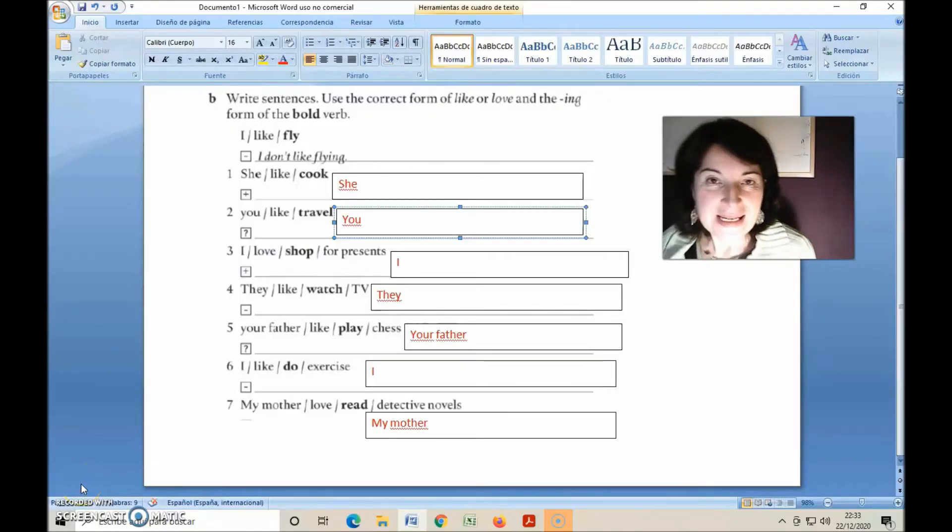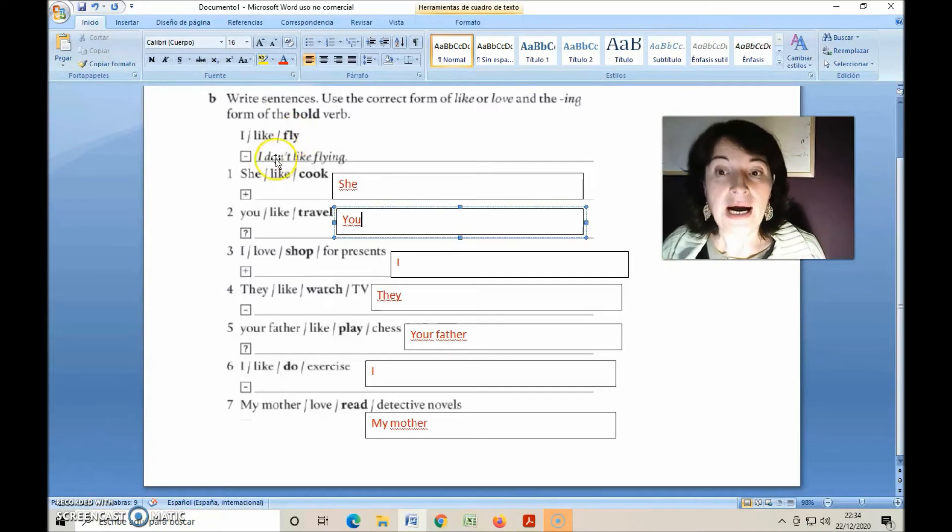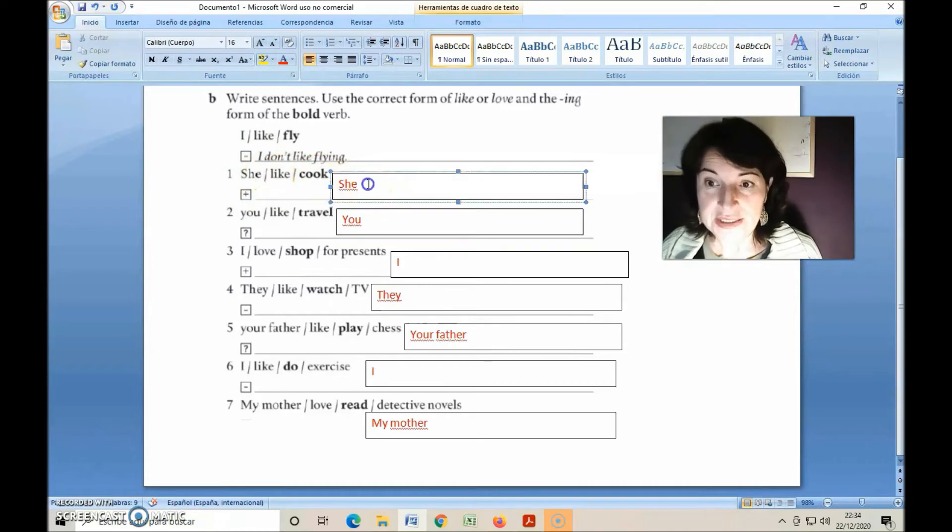Let's do this exercise which is with like, love and the infinitive with I-N-G. Let's go. Here we have the example, I don't like flying. Like and love go with verbs with finishes in I-N-G. So I don't like flying. This is next. Here we have to do an affirmative sentence. She like cook. So she is the third person, we add an S, likes and then cooking finishing in I-N-G.